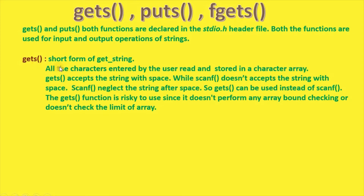The gets function is the short form of getString. All characters entered by the user are read and stored in a character array by the gets function. gets accepts strings with spaces, while scanf doesn't accept strings with spaces — scanf neglects the string after a space.